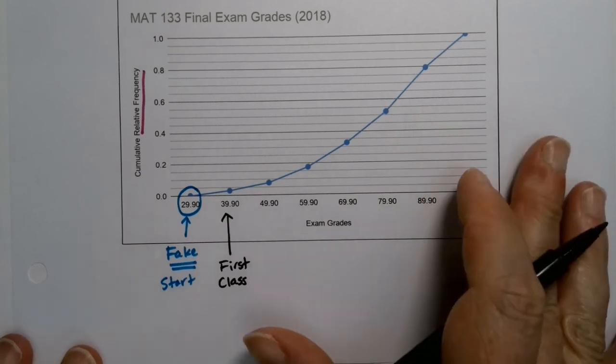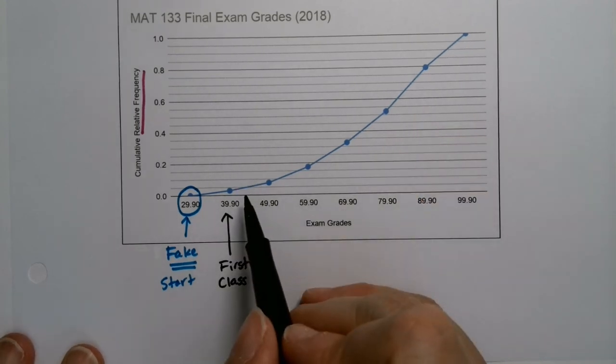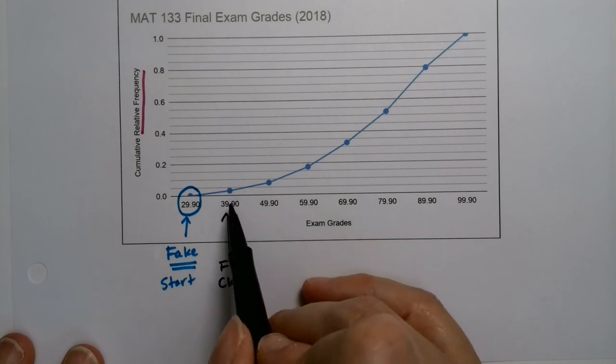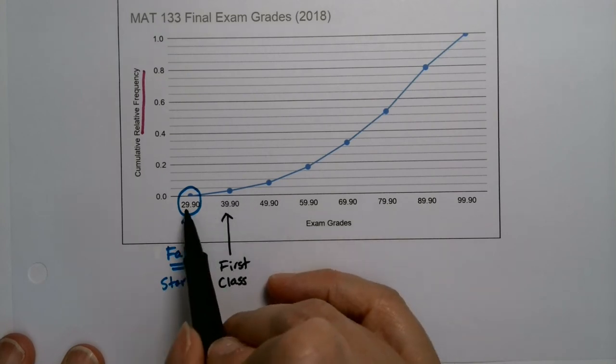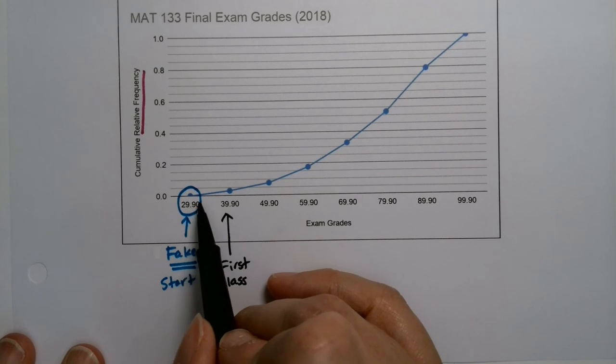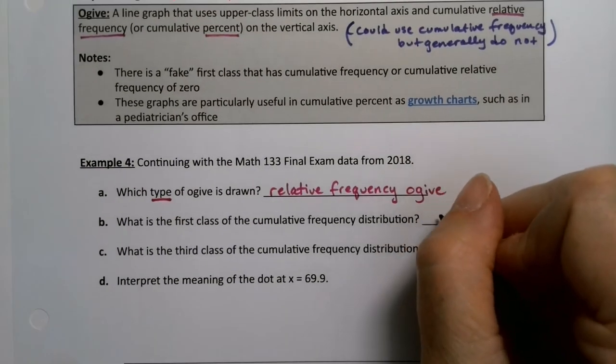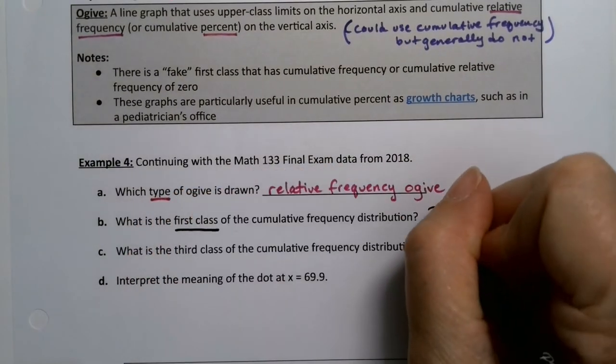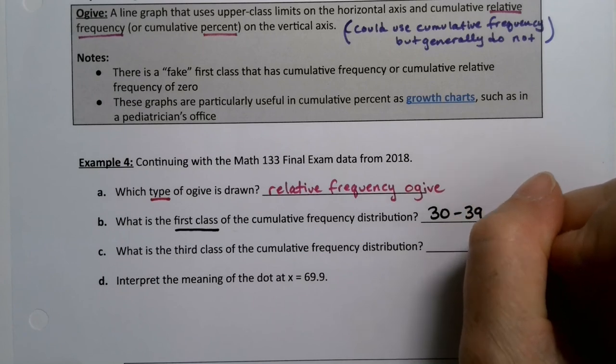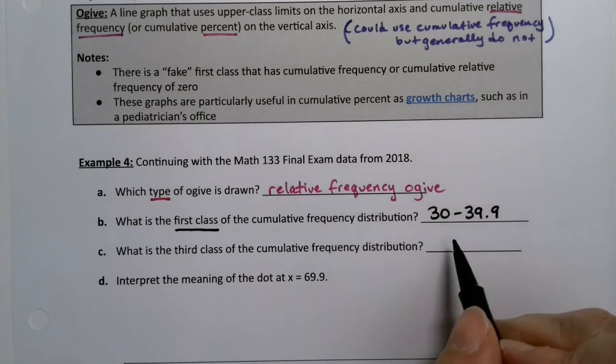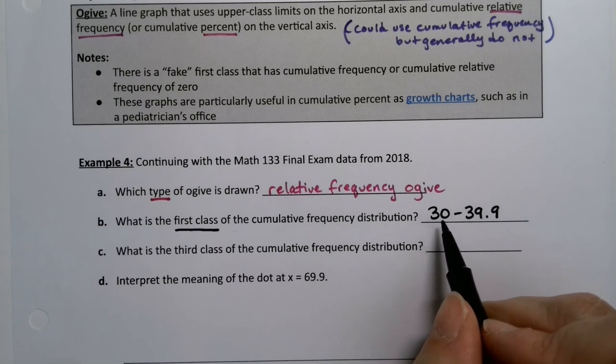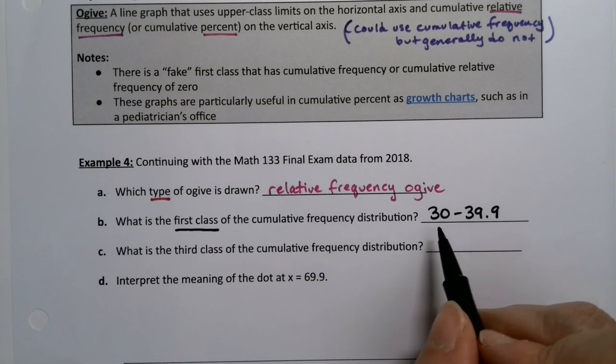Okay. So the first class of the upper of this distribution, well, 29.9 is right before 30. So it was 30 all the way up to 39.9. So I would say the first class was 30 to 39.9 because 29.9 is fake. It's not really part of the table, but 29.9 is right before 30. So 30 is the start of the next class. So that was the first class.